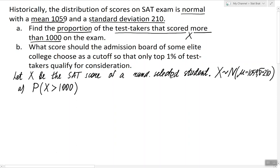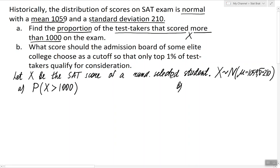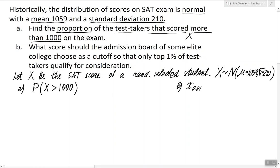For Part B: what score should the admission board of some elite college choose as a cutoff so that only the top 1% of test takers qualify for consideration? Here the question is about finding a value that divides the population into the top 1% and bottom 99%. Basically, we are looking for the 99th percentile, which can be expressed as x₀.₀₁, where 0.01 represents the top 1%.